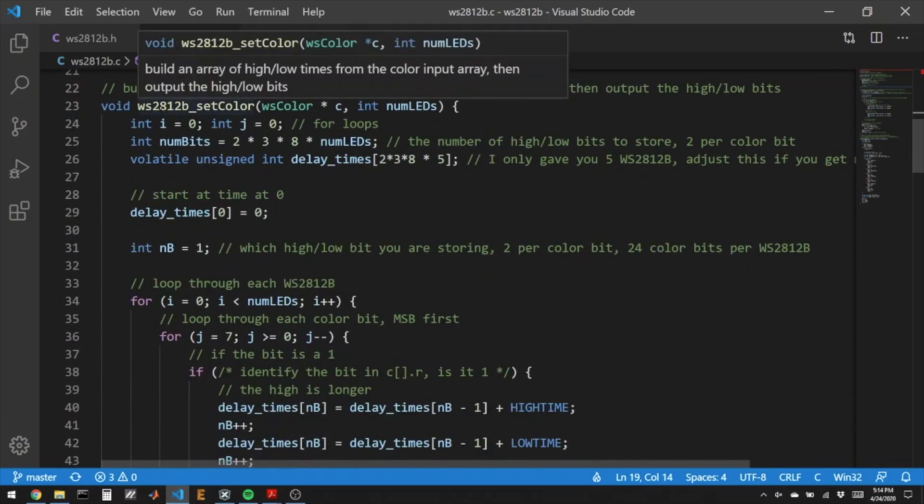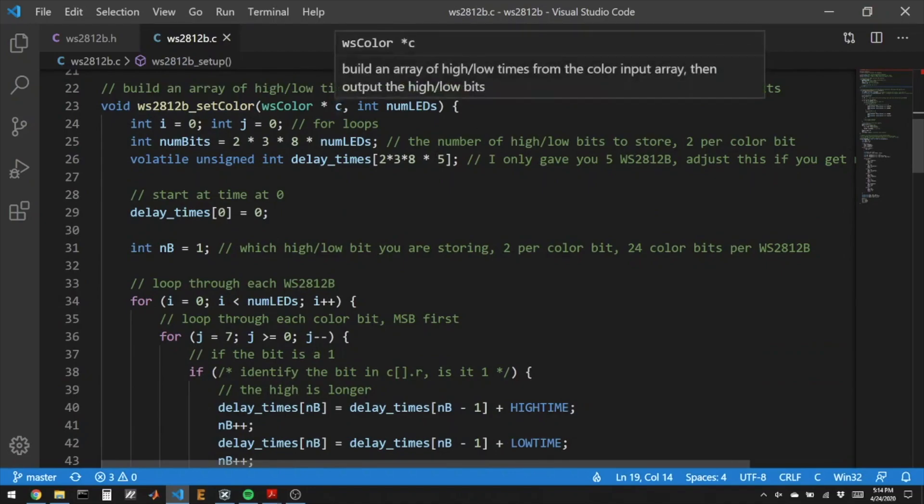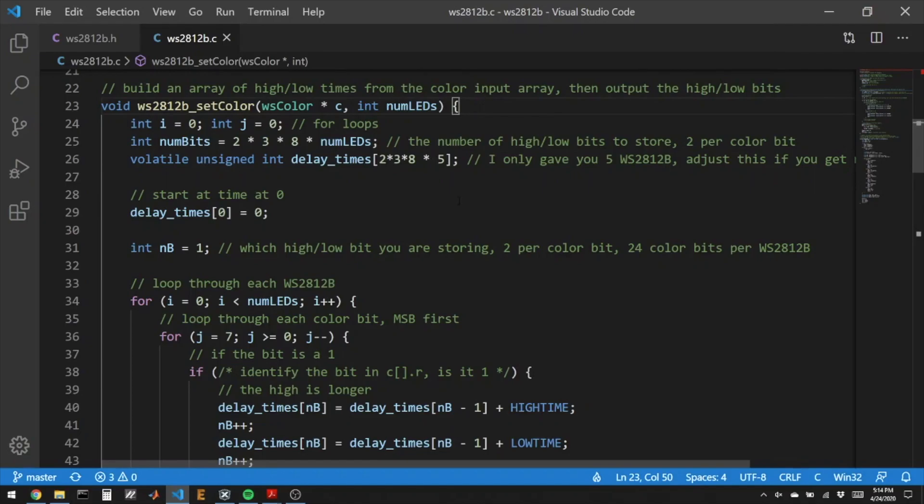Here's the main function, WS2812B setColor. It takes in an array of colors and the number of elements of that array. What you need to do is save the amount of time that passes between the high and low bits into this array delay times. Because we're in C, we can't dynamically change this amount. I've left space for 5 LEDs. So each LED is 8 bits per color, 3 colors each, and it takes 2 states for each bit. If you happen to buy some more NeoPixels from somewhere else, just change this number so that you can drive more of them. There'll be a little caveat about that later.